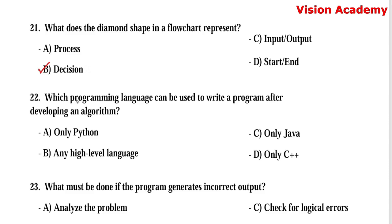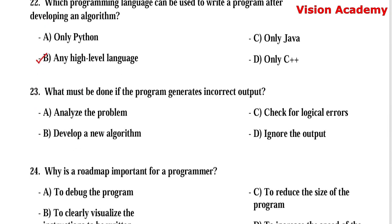Question number 22: Which programming language can be used to write a program after developing an algorithm? Option A, only Python. Option B, any high level language. Option C, only Java. Option D, only C++. Here, option B, any high level language, is the right answer.